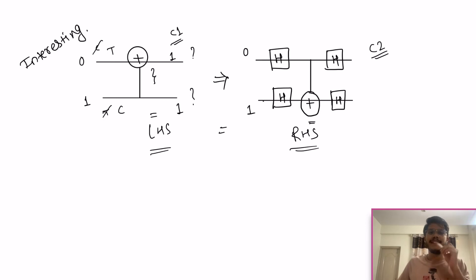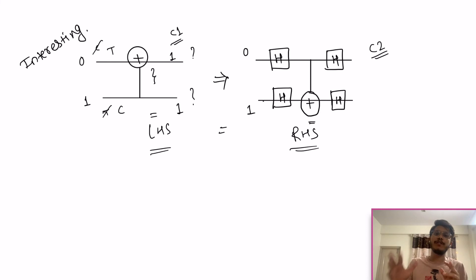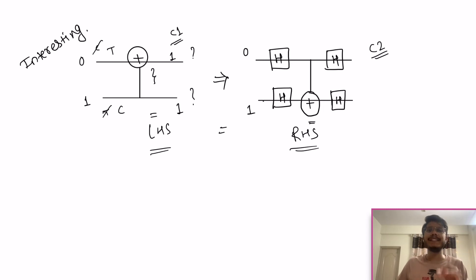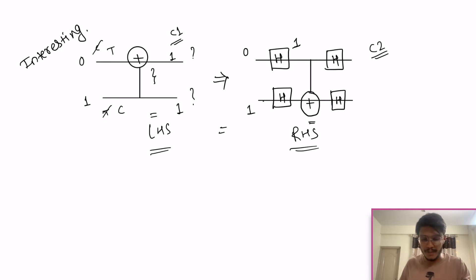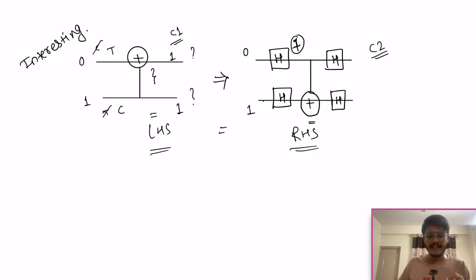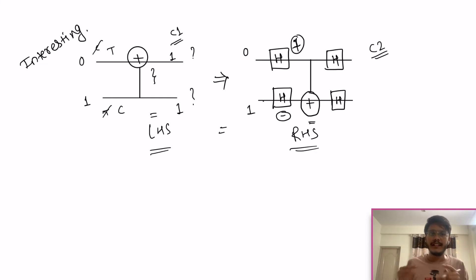If you apply the Hadamard gate on the |0⟩ state — please watch the previous video where I explained the Hadamard gate — it will get changed to |+⟩. And if you apply the Hadamard gate on the |1⟩ state, it will get changed to |−⟩. If you don't remember, go watch the previous video; I'll attach the link in the description.